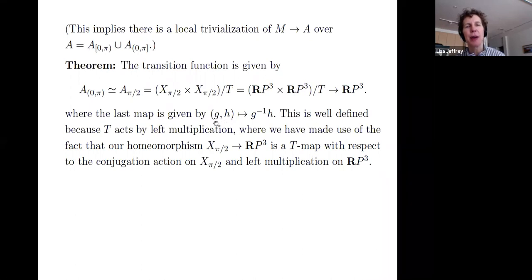Is given by basically the map that sends two elements G, H goes to G inverse H. This map is well-defined because T acts by left multiplication, so that doesn't apply, that gets eliminated when you multiply when you send G, H to G inverse H.